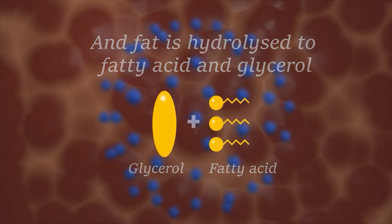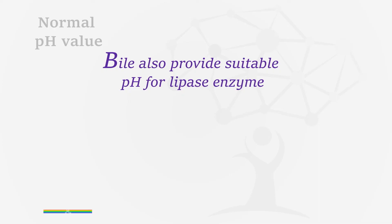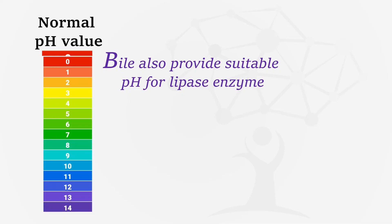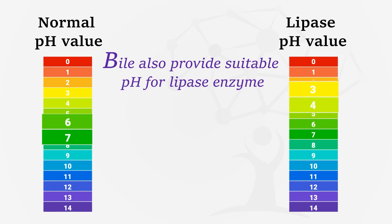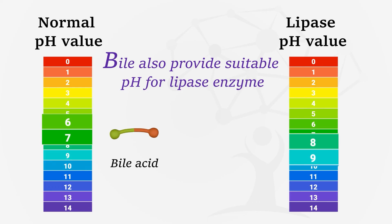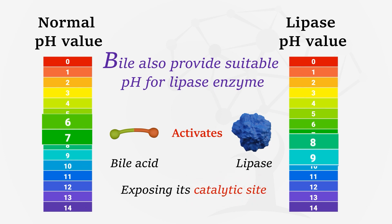Bile also provides a suitable pH for the lipase enzyme. The normal pH in the intestine is 6 to 7, but the suitable pH for lipase is 8 to 9. Bile acid also activates the lipase by exposing its catalytic site.